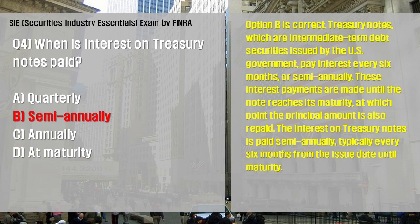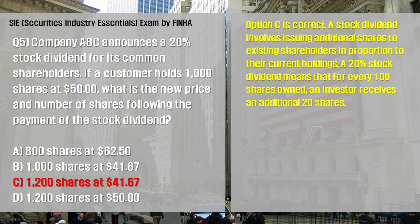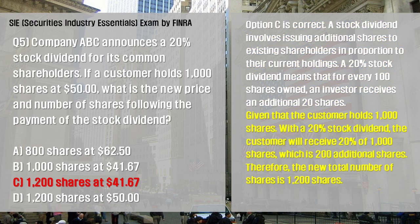Company ABC announces a 20% stock dividend for its common shareholders. If a customer holds 1,000 shares at $50, what is the new price and number of shares following the payment of the stock dividend? Option C is correct. A stock dividend involves issuing additional shares to existing shareholders in proportion to their current holdings. A 20% stock dividend means that for every 100 shares owned, an investor receives an additional 20 shares. Given that the customer holds 1,000 shares, with a 20% stock dividend the customer will receive 200 additional shares, for a new total of 1,200 shares.